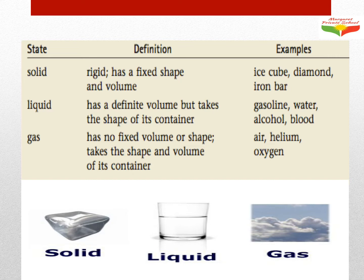Moving on to gas. What is a gas? A gas does not have a specific shape or volume — it has no fixed volume or shape. For example, if you put air into a balloon, it takes the shape of the balloon, no matter which shape your balloon is. So according to whatever container you put the air or gas in, it will take that shape.